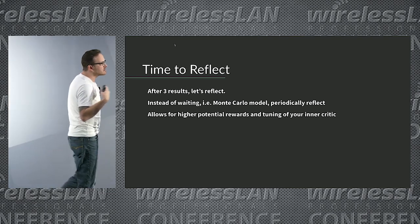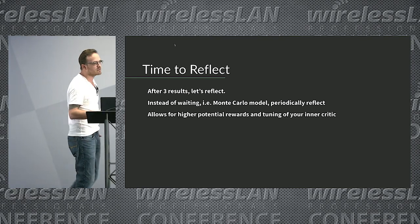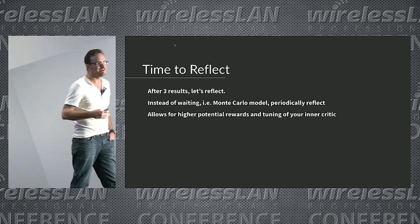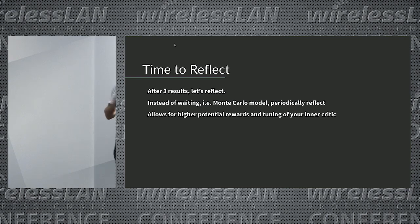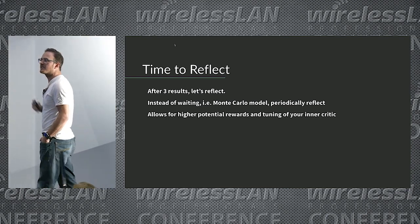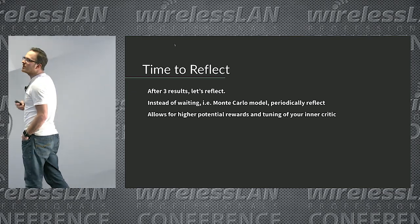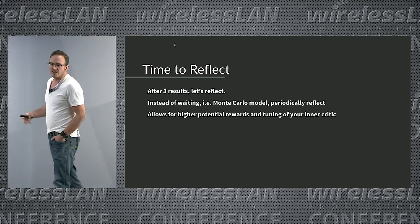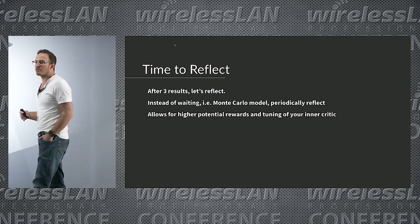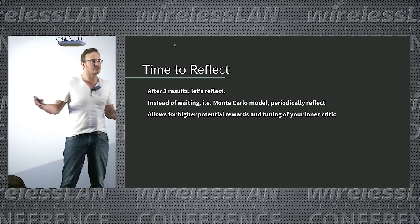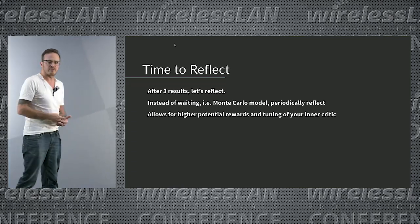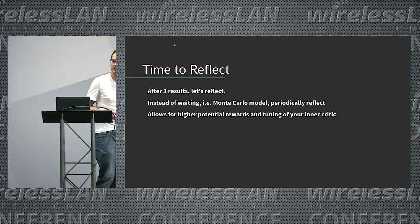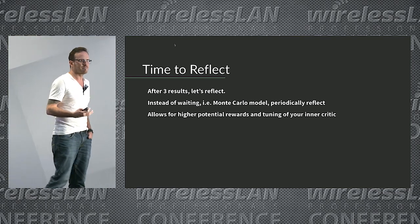Once we have three results, we step back and reflect. This allows us to work on a more human-scale timeline rather than waiting until the end of the day. Hindsight is 20/20 — we can reevaluate and see what we could have done differently, but that requires going through those actions first. That's the Monte Carlo model: collect a huge dataset over a long period, then do a periodic reflection. Instead, we're looking at shorter intervals, which allows higher potential rewards and enables us to tune our inner critic more continuously.